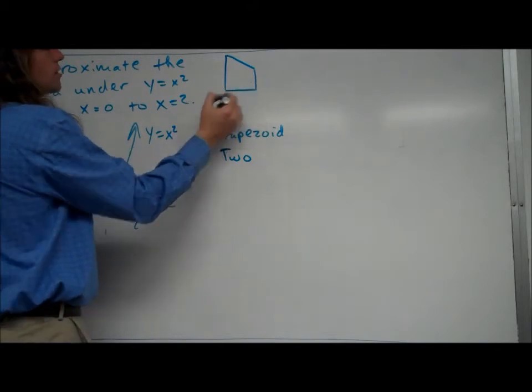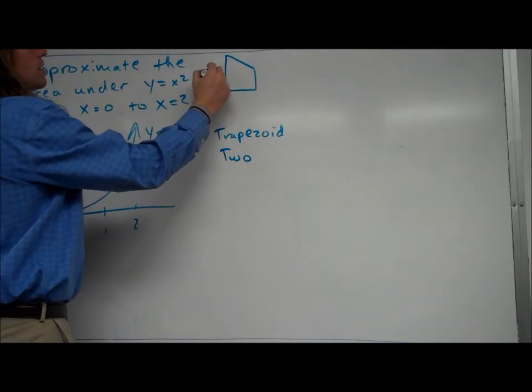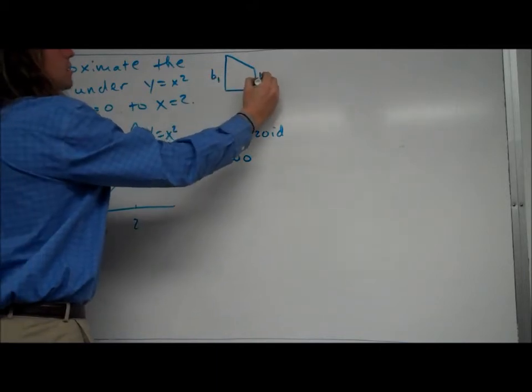But with a trapezoid, just to remember here, the bases of the trapezoid are the two sides that are parallel. So we can call that like base one, we can call this like base two.